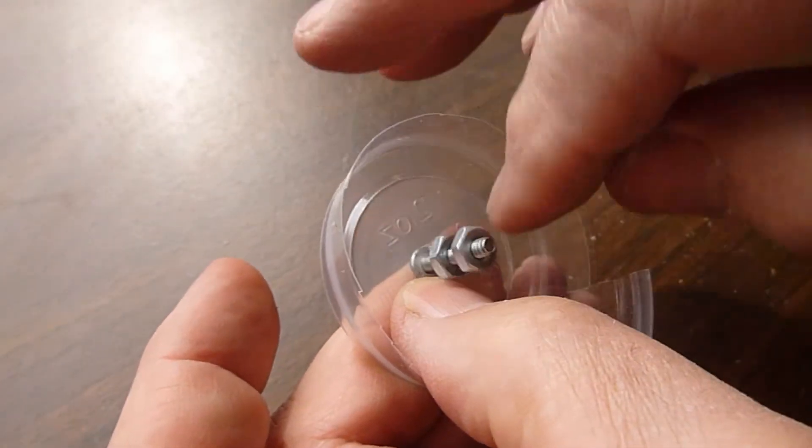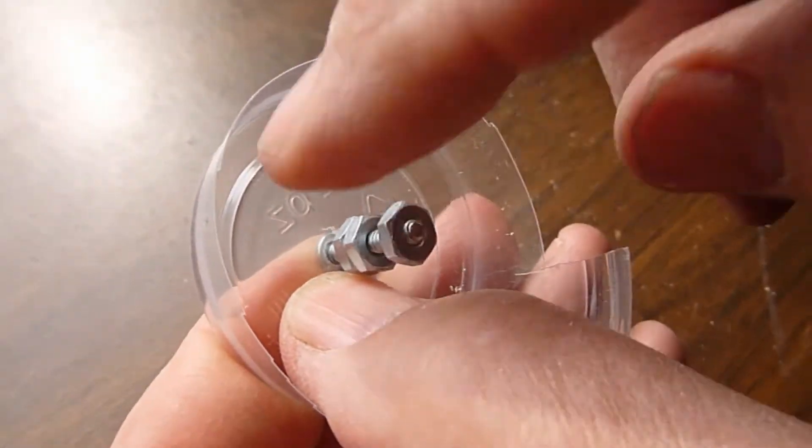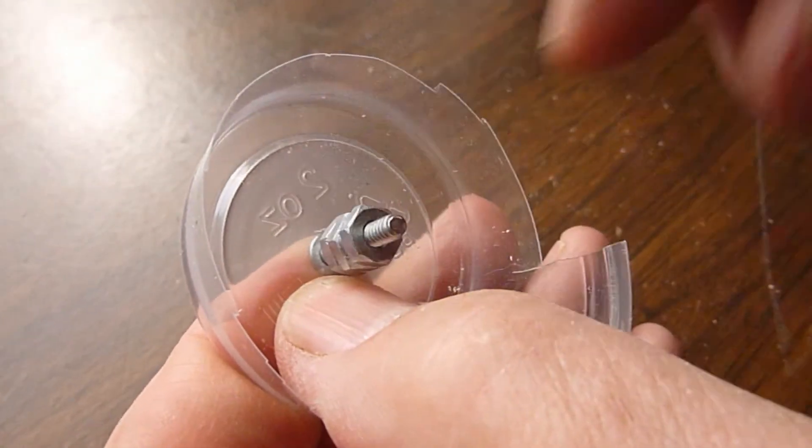After putting a three quarter inch 6-32 inch screw through the hole in the bottom of the cup, screw on 5 nuts as shown.